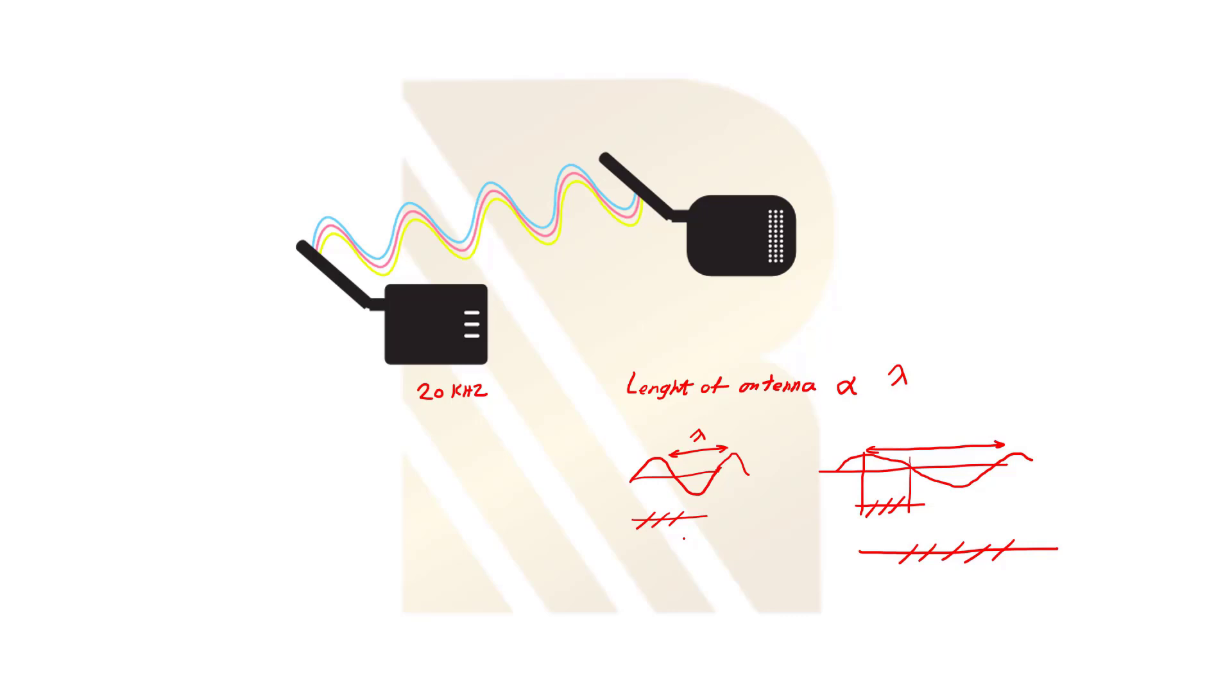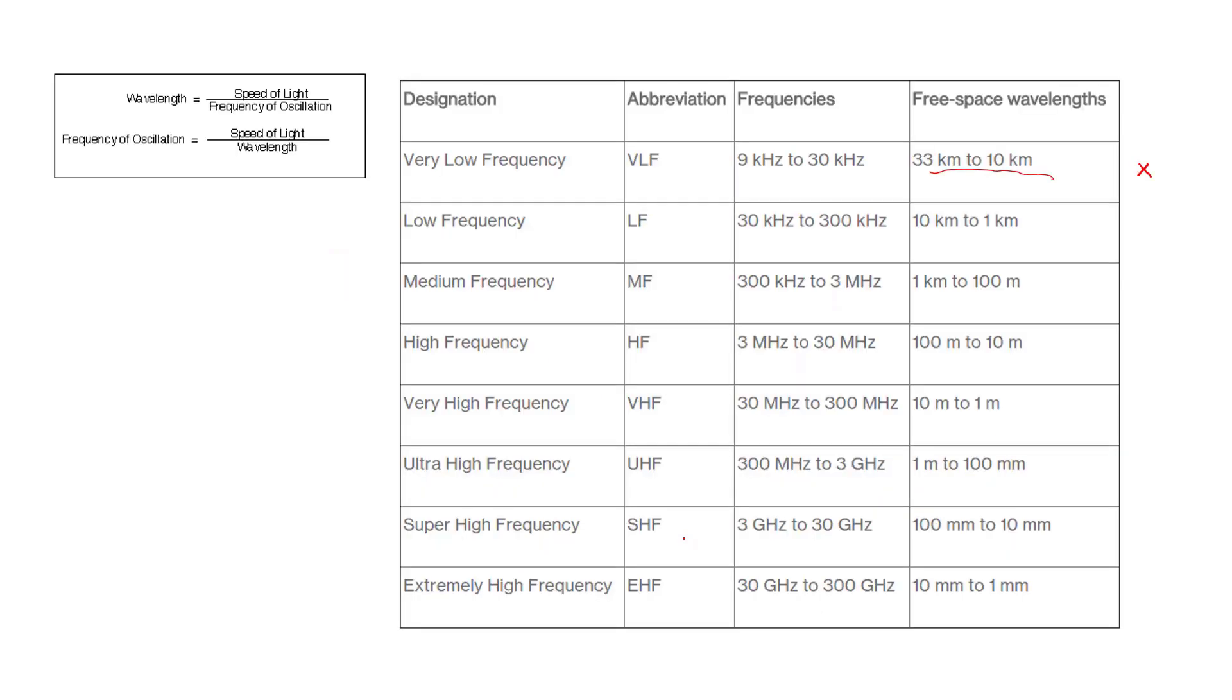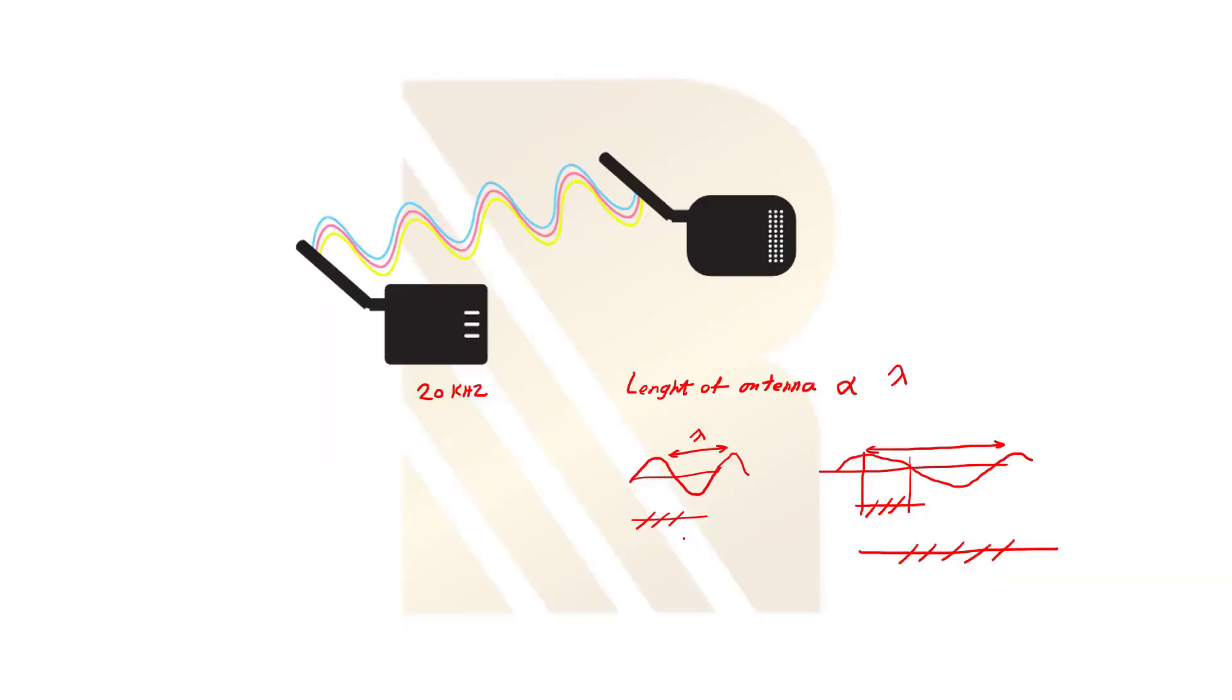We're not going to study this in detail, but you have to know the length of antenna is proportional to lambda, and generally it's proportional to a quarter of lambda. So here, for 20 kilohertz, we have 20 kilometers wavelength. A quarter of that means we need an antenna size of five kilometers for this mobile, which is really impossible.